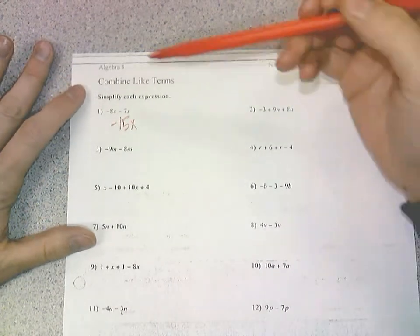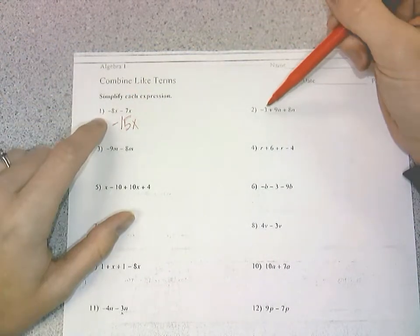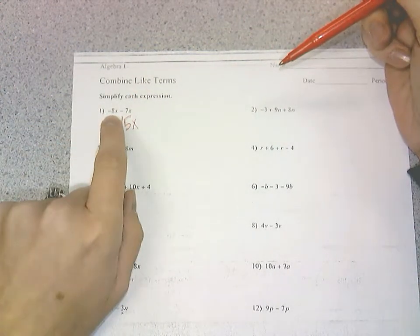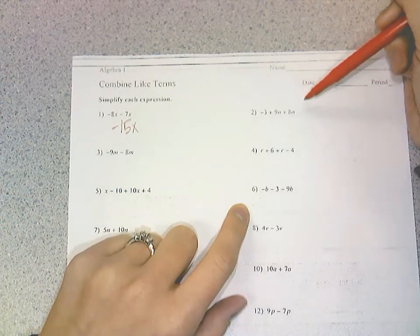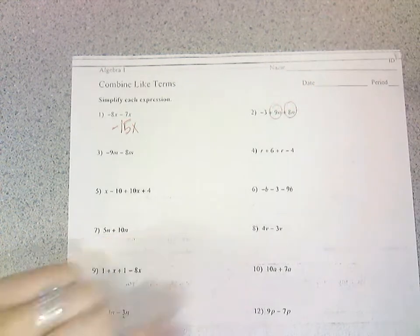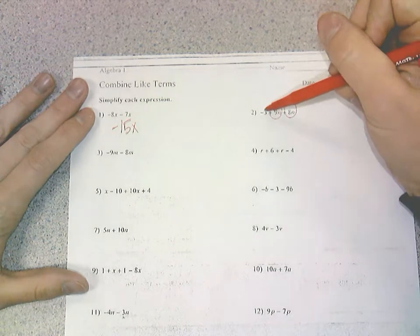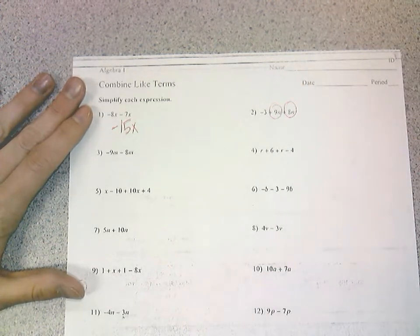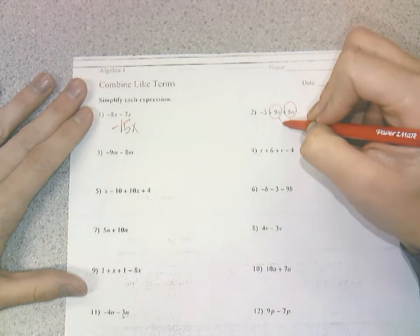So on this problem, it's slightly different than number one, because yes I have three terms instead of two terms, but notice on number one how they both have x's. On number two they're not all like. So 9n and 8n both have x's, so they are like, but my 3 doesn't have an x, so it is not like. So you cannot combine the 3 with your 9 and your 8.